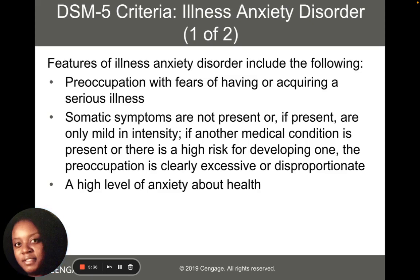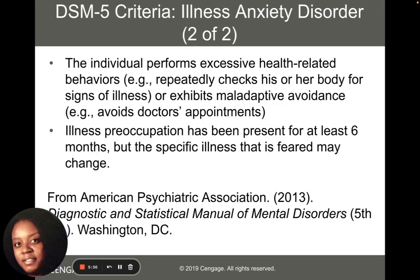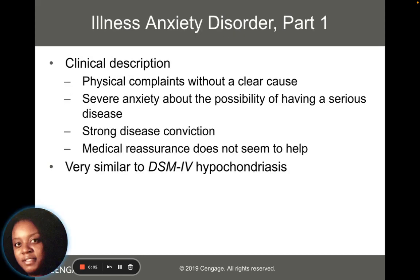Another somatic symptom disorder is illness anxiety disorder, previously known as hypochondriasis — where the term hypochondriac comes from. The DSM-5 criteria indicate it lasts more than six months, involves physical complaints without a clear cause, and the experience of severe anxiety about the possibility of having a serious disease. There's a strong disease conviction, medical reassurance doesn't help, and there's a tendency to doctor shop to find the right condition.